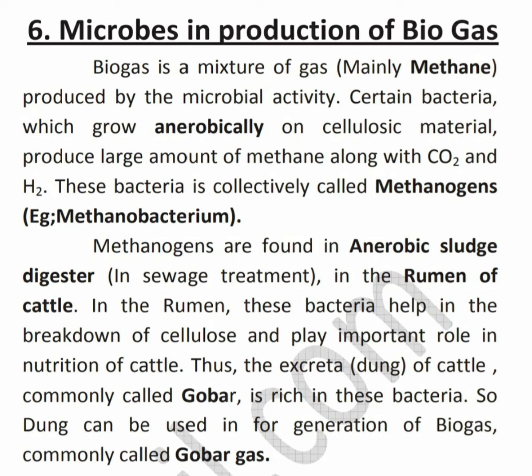This bacteria is called methanogens. Methanogens are found in the anaerobic sludge digester — this is called the anaerobic sludge digester. They are also found in the rumen of cattle.